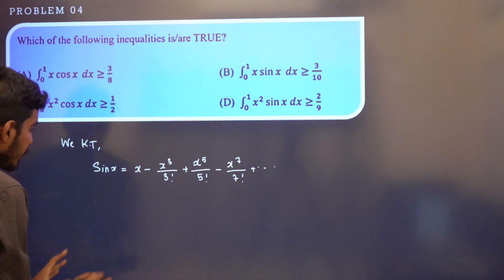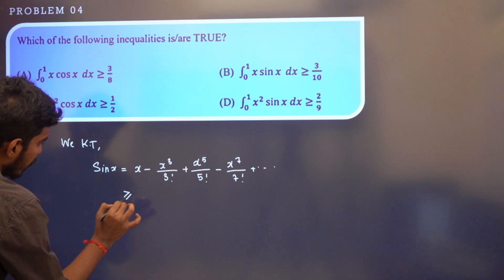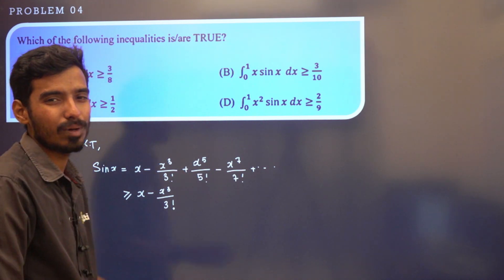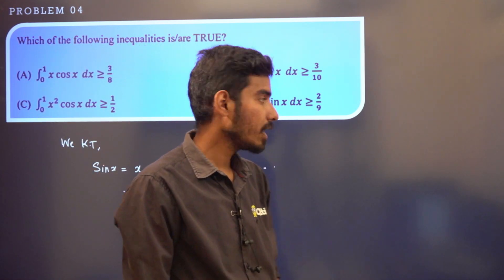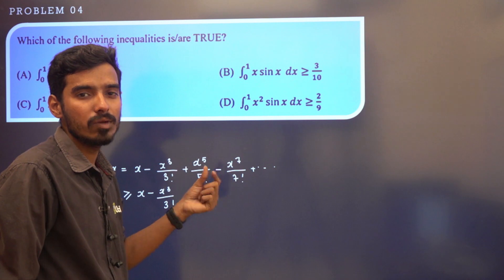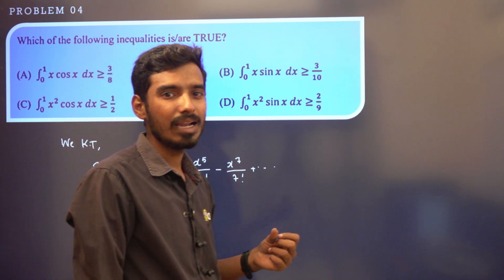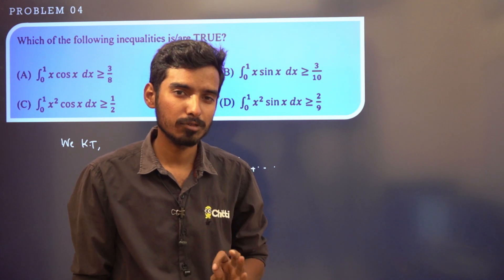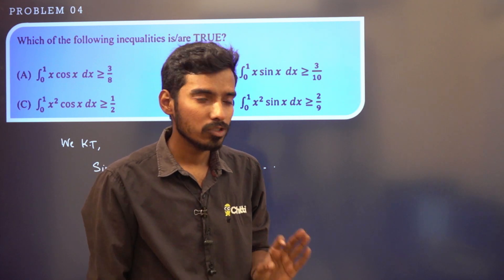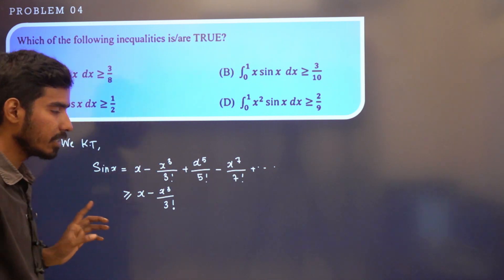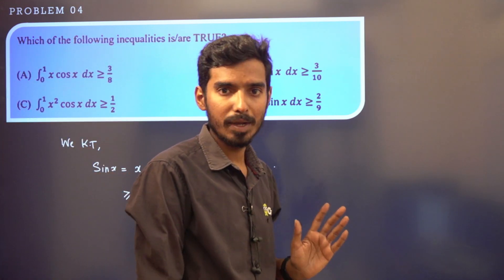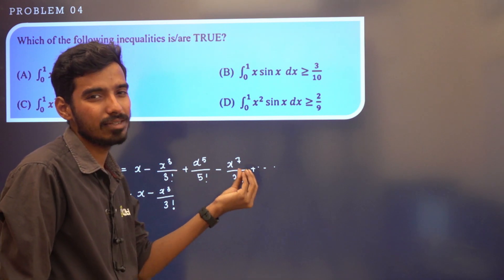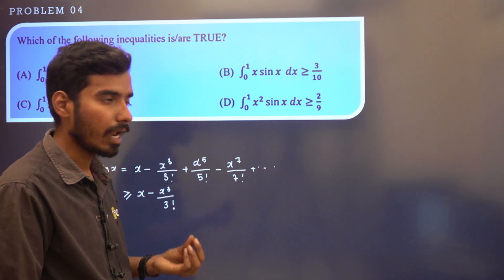So sin x is always greater than or equal to x − x³/3!. This is the approximation. If you look at the remaining terms, they are very very small, so in the approximation we can omit those terms. Approximately, sin x is always greater than or equal to x − x³/3!.